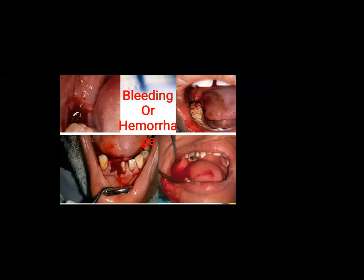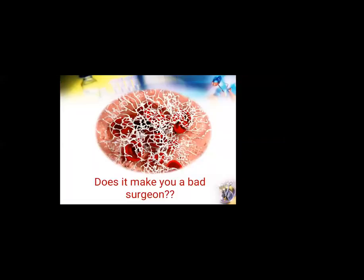The reason for choosing this topic is that bleeding or hemorrhage is one of the most feared complications in dental practice, if not the most feared complication. As a dentist, we do take precautions to avoid such complications, but we do not have absolute control over their occurrence. So when such complications do, in fact, occur, does it make the operating surgeon a bad surgeon?